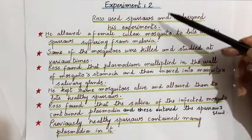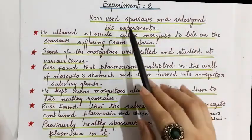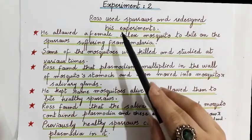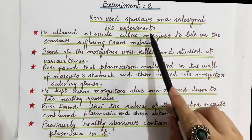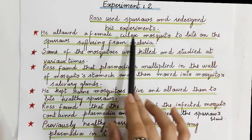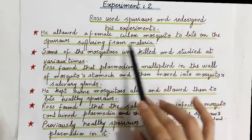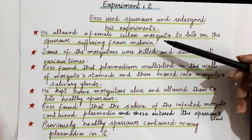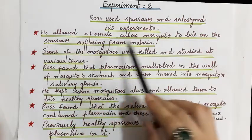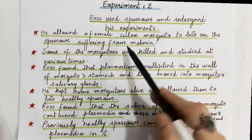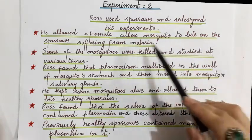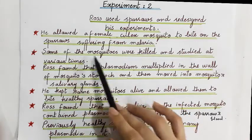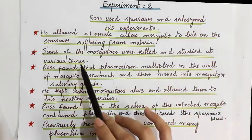In Experiment Two, Ross used sparrows and re-designed his experiments. He allowed a female Culex mosquito to bite sparrows suffering from malaria. So for sparrows, the mosquito species used was Culex, not Anopheles. Some of the mosquitoes were then killed and studied at various times.